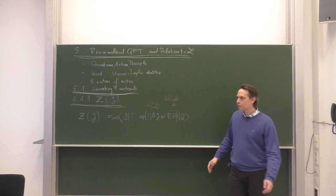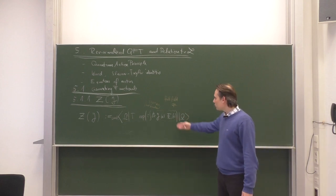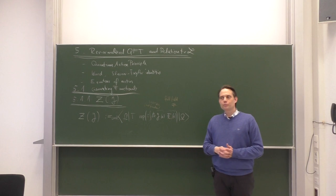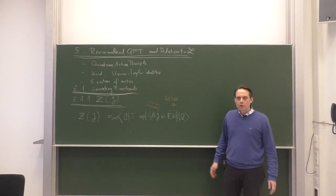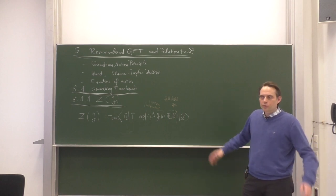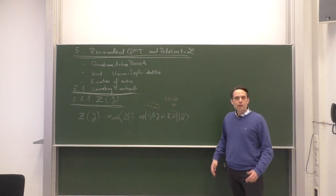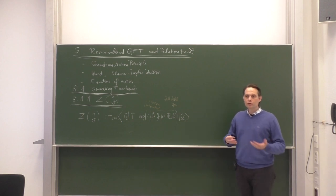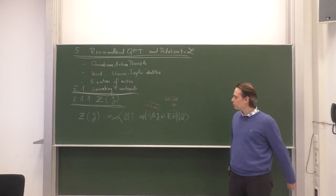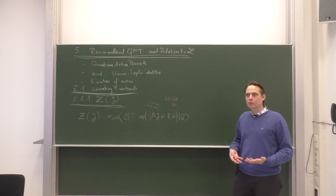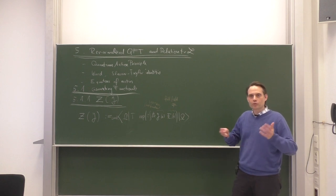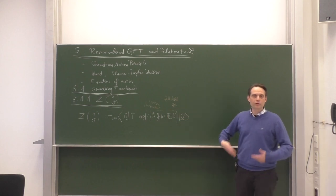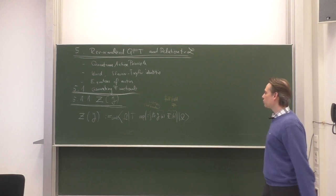Those Green functions and axiomatic quantum field theory in general are defined without mentioning any Lagrangian. In principle, a quantum field theory does not need a Lagrangian — a Lagrangian is not a necessary or fundamental property of a quantum field theory. However, as you know, all important quantum field theories used in elementary particle physics and elsewhere are based on Lagrangians. The Lagrangian gives us a constructive recipe or constructive definition of a concrete quantum field theory.